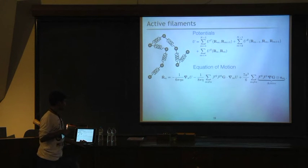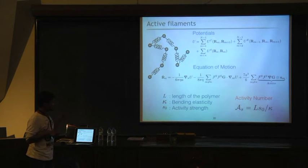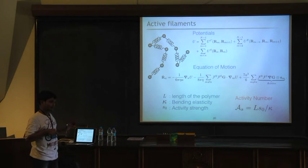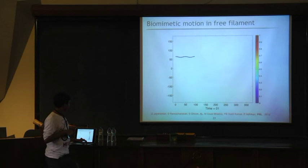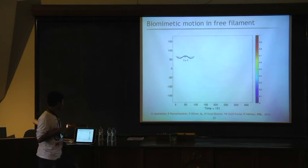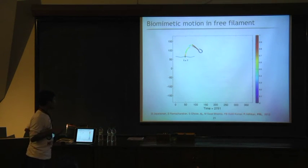Now, the moment you will get so, you can write one dimensionless parameter, the activity number, in terms of the length of the polymer, the strength of the activity S naught, and the bending elasticity kappa. Now onwards whatever I will study, I will study in this activity number parameter space instead of activity, kappa, or L. What we see is that if you have an initial condition with some perturbation in it and you turn on the activity, you will see that this biomimetic motion starts appearing, and you will see that happening with time. It is completely, there is no external force or no external torque, but still you will get these biomimetic motions in detail.